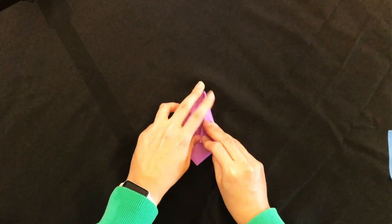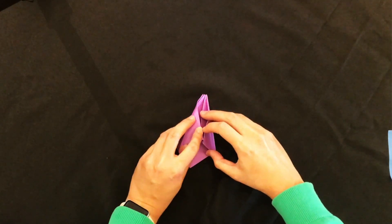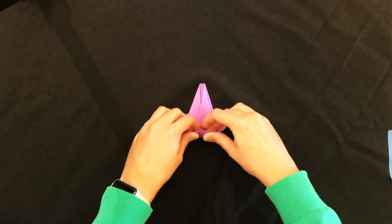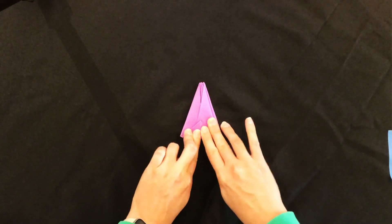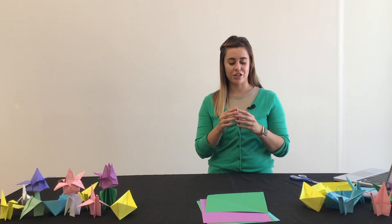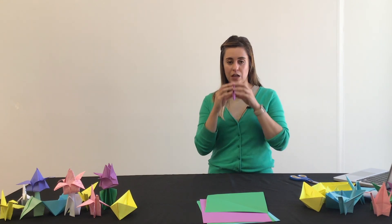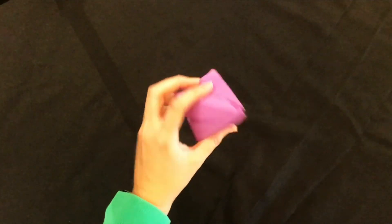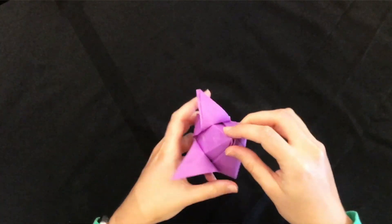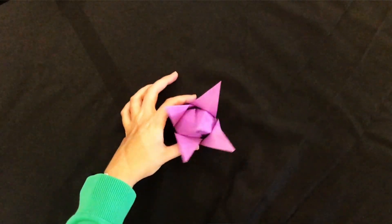So now you should have this shape here. And there should be a triangle at the bottom. There should be a little hole. And what you're going to do is you're going to inflate through that hole to make your flower. So now that it is inflated, you want to fold each of the sides down to make your petals. And now you have your tulip.